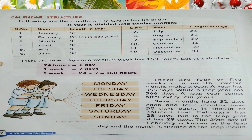There are 7 days in a week. A week has 168 hours. Let us calculate it: 24 hours equal 1 day, 1 week equals 7 days, and 1 week equals 24 multiplied by 7, which equals 168 hours. So in 1 week there are 168 hours, and there are 7 days in a week.